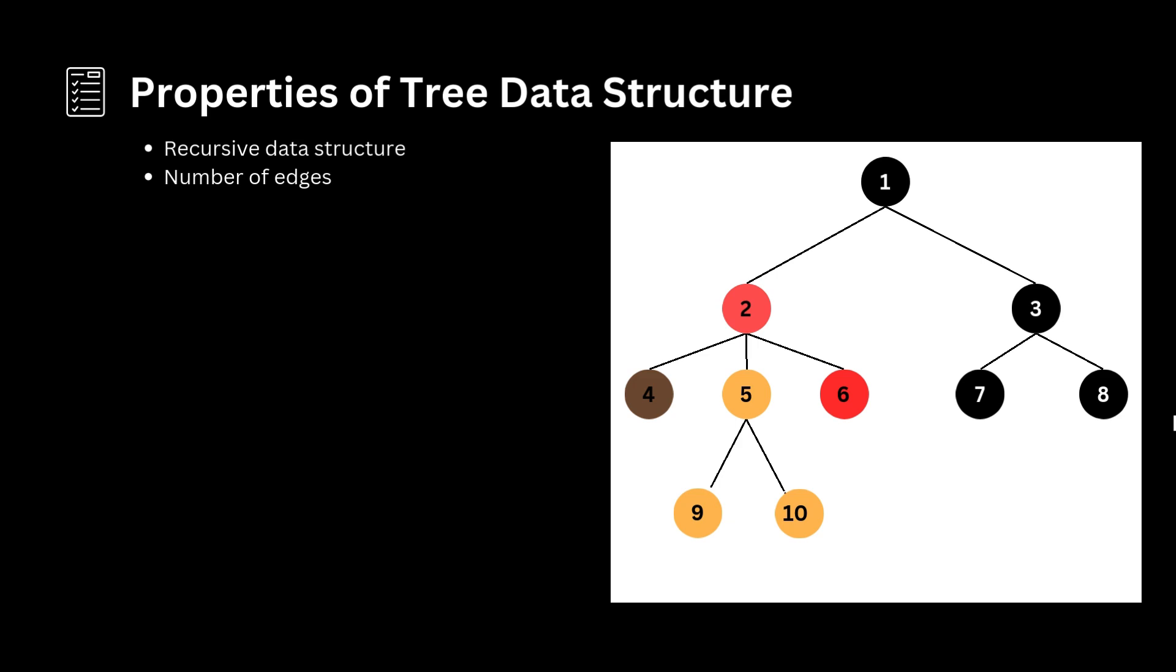The next property is number of edges. In a tree with n nodes, there are n-1 edges. Each arrow in the structure represents a link or path. Every node except the root node has at least one incoming link called an edge. Each parent-child relationship is represented by one link.